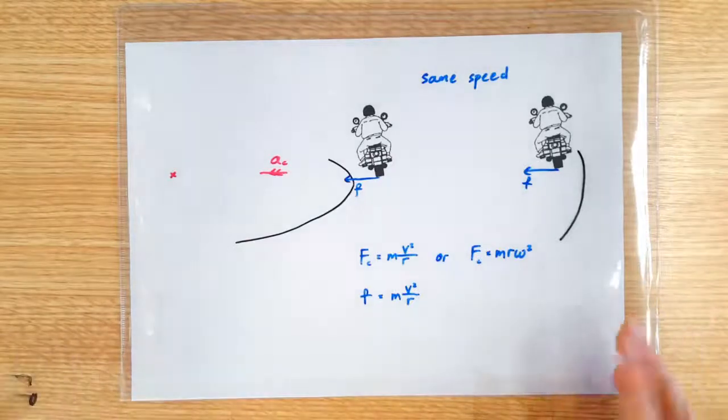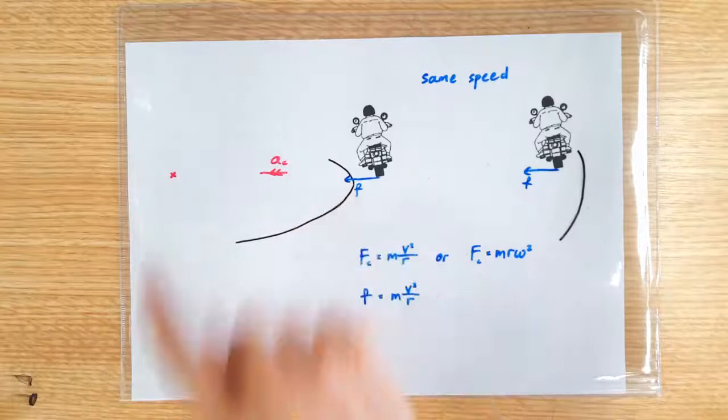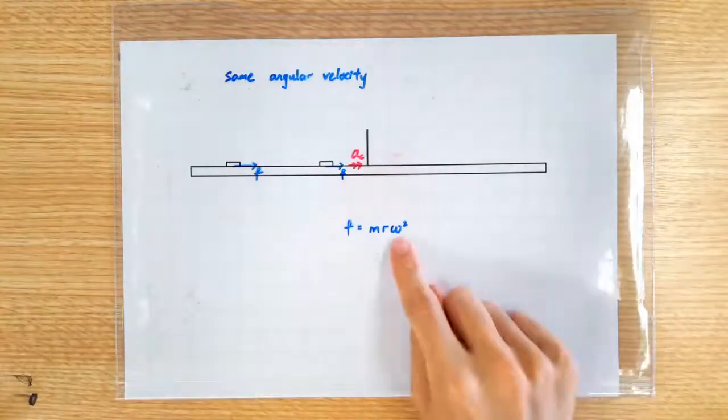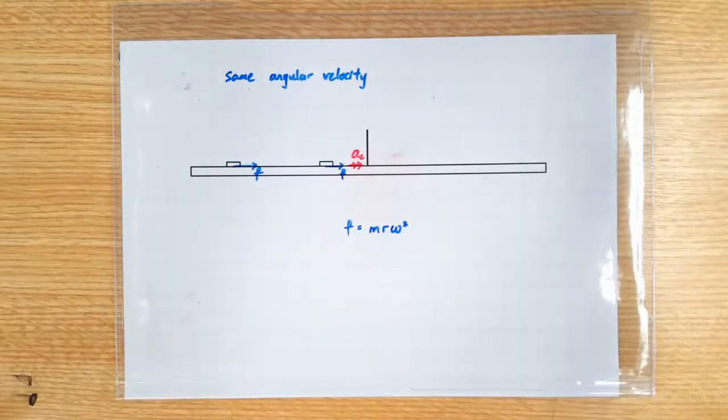So basically, for the same speed, a tighter turn requires a larger centripetal force. But for the same omega, a wider turn requires a larger centripetal force. Get it? Ta-ta!